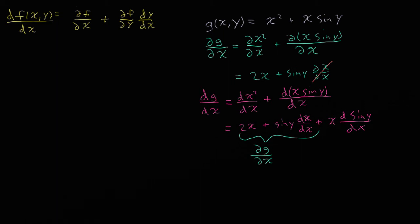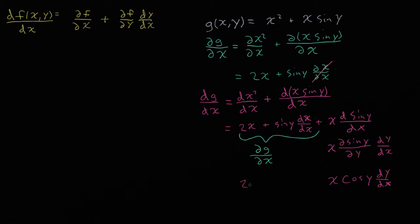To keep going with this term, we have to use the chain rule. What we get is x times the partial derivative of sine y with respect to y, times the full derivative of y with respect to x. Taking that partial derivative, the derivative of sine y with respect to y is just cosine y. And unless we know the relationship between y and x, we can't evaluate dy/dx, so we just write dy/dx. So the final result altogether is: 2x + sine y + x cosine y times dy/dx.